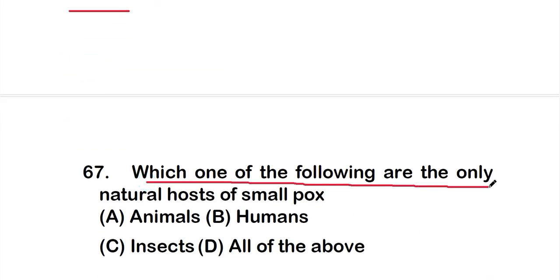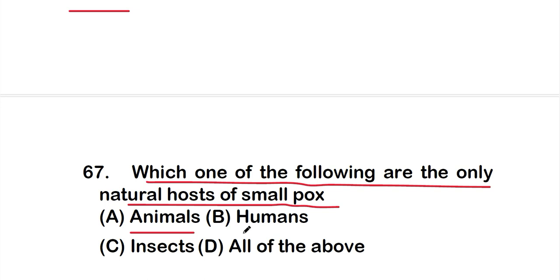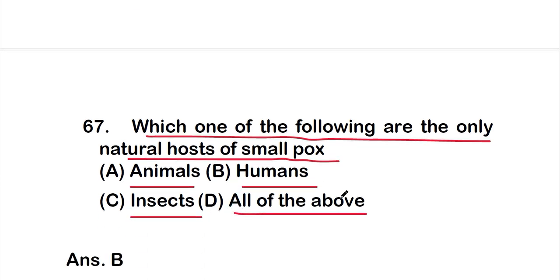Question number 67: Which one of the following are the only natural host of smallpox? Option A: animals, option B: humans, option C: insects, or option D: all of the above. The correct answer is option B — humans are the only natural host of smallpox.